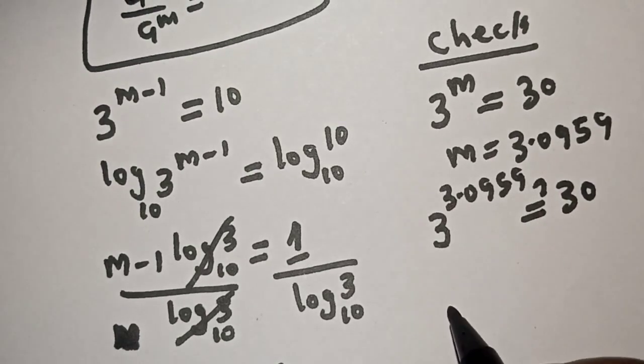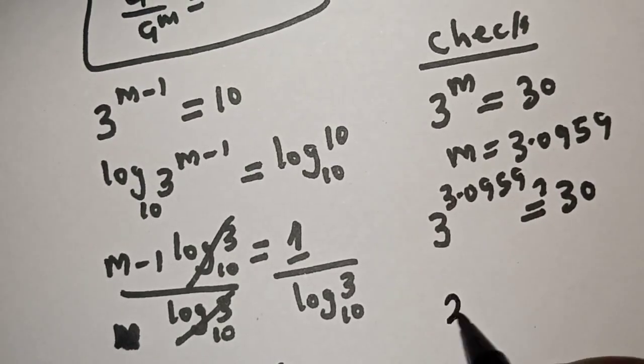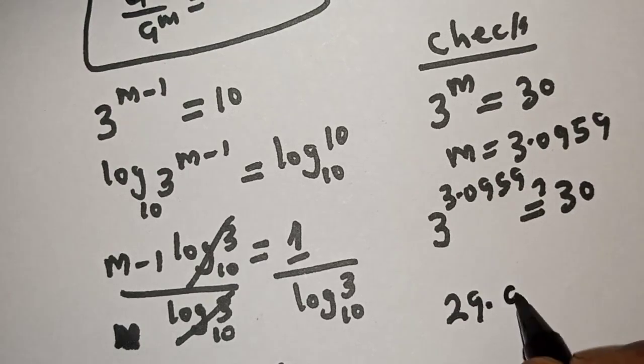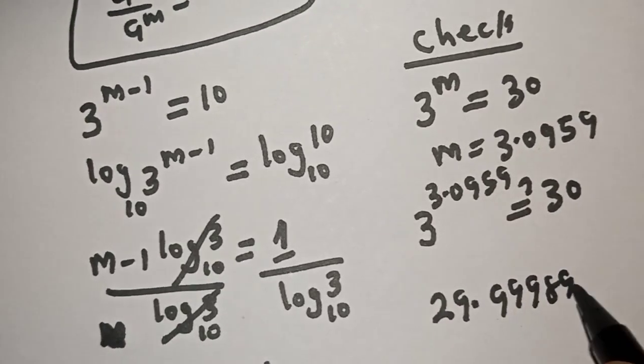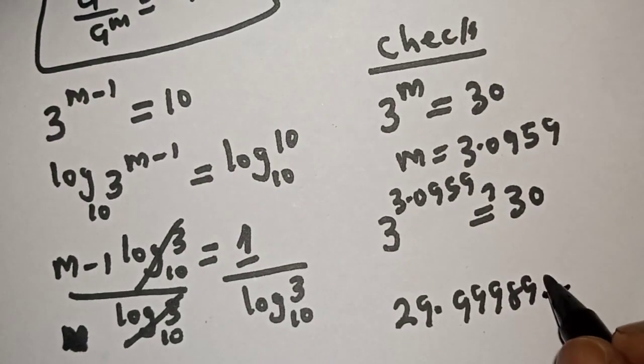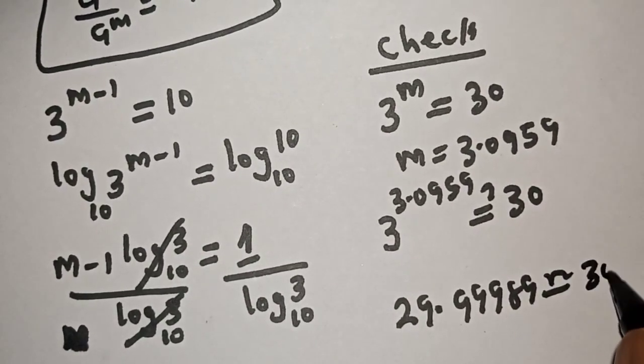This is equal to 29.9989. Then this is approximately equal to 30.